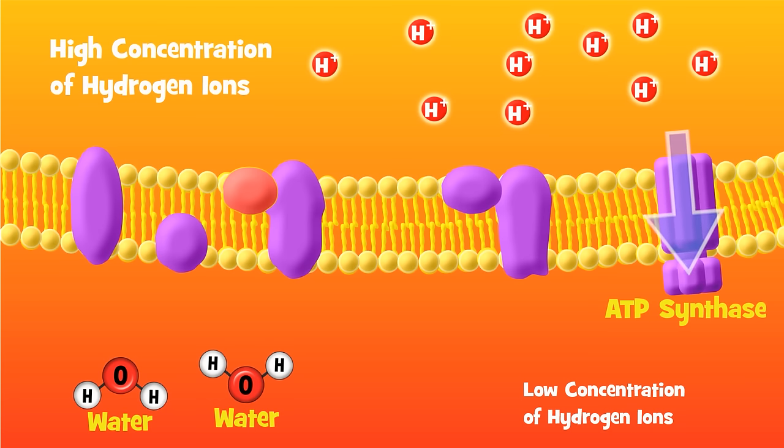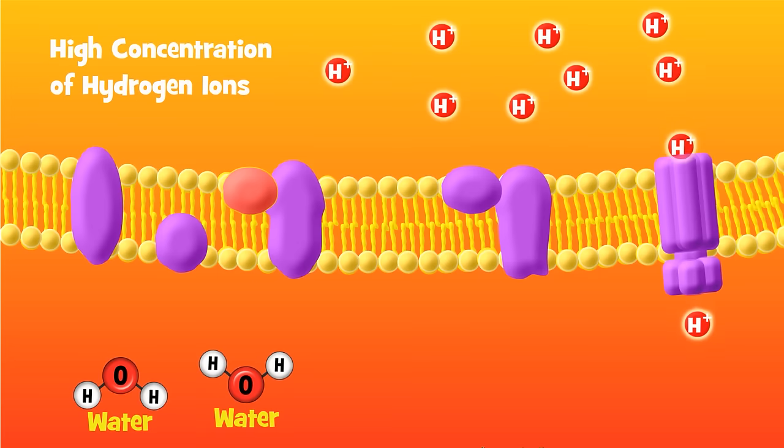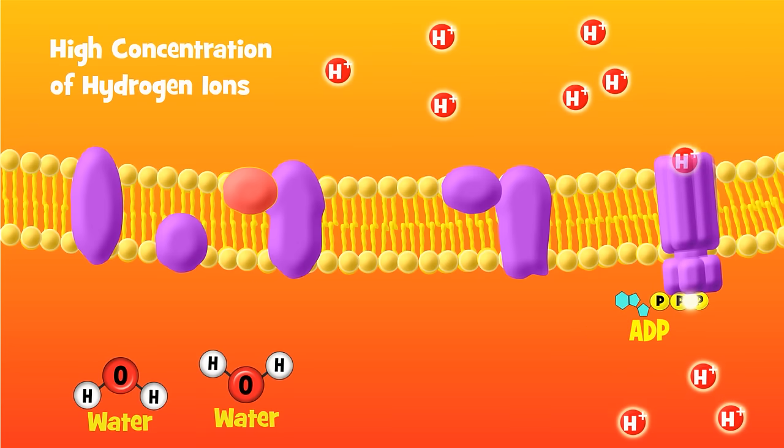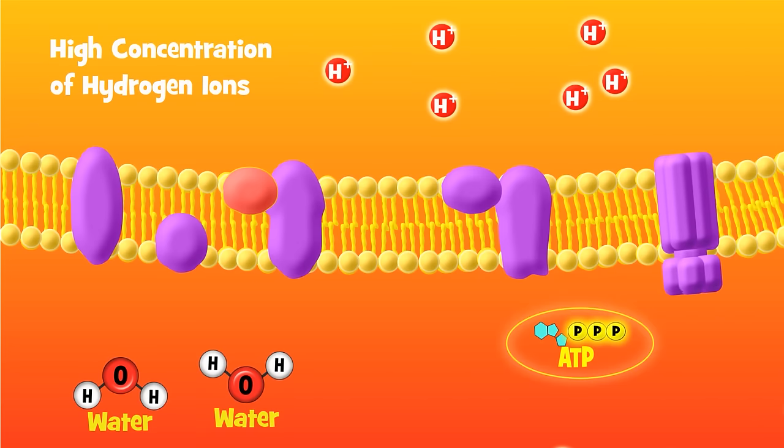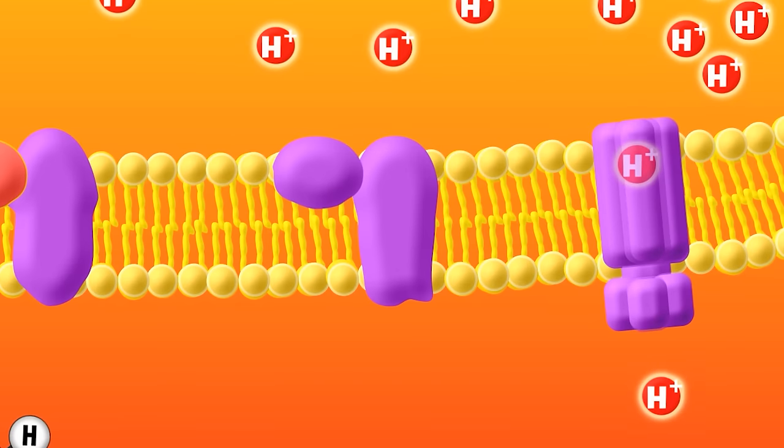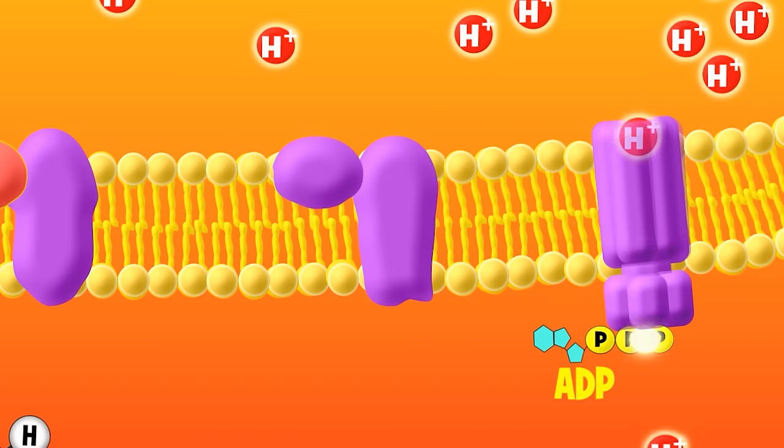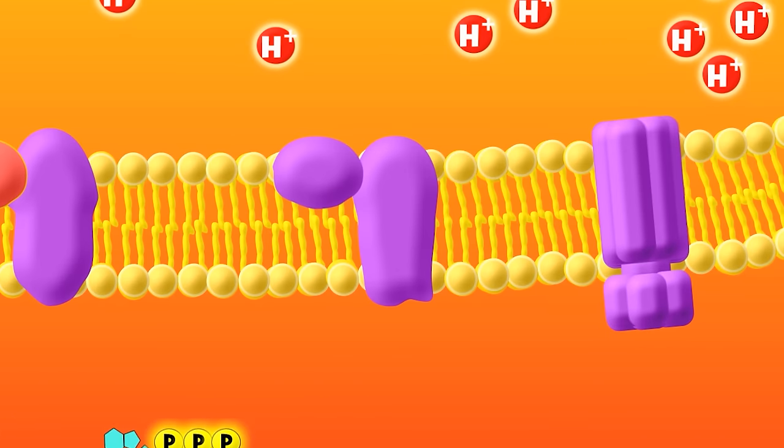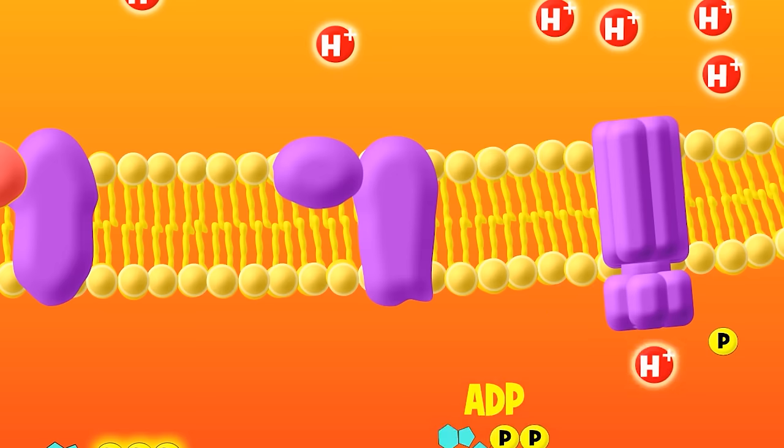This facilitated diffusion of hydrogen ions through ATP synthase causes ATP synthase to spin like a turbine and produce ATP. Such a cool mechanism. It's like a microscopic hydroelectric dam, generating ATP instead of electricity as hydrogen ions passively flow through.